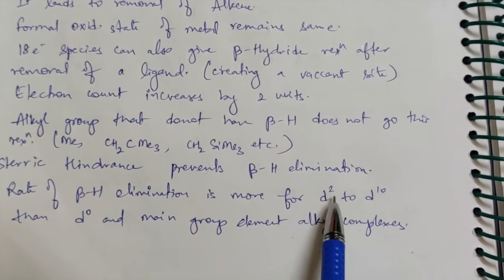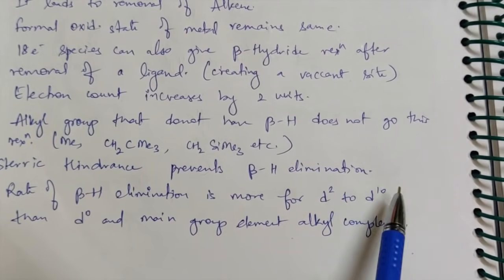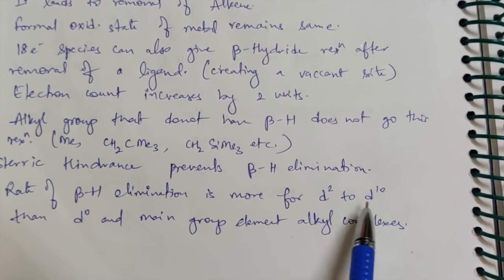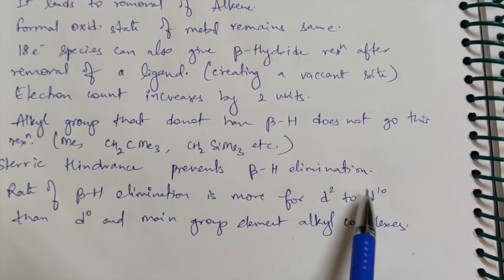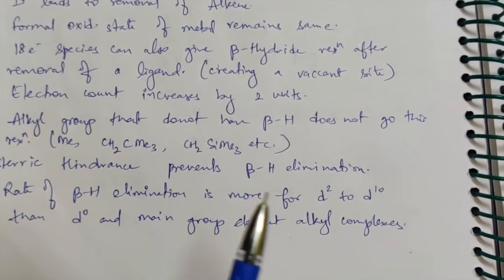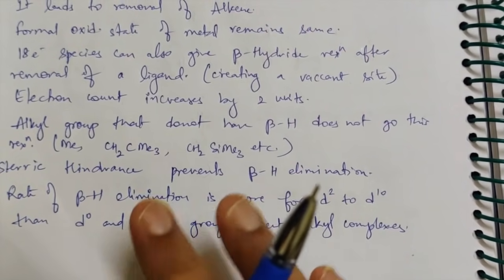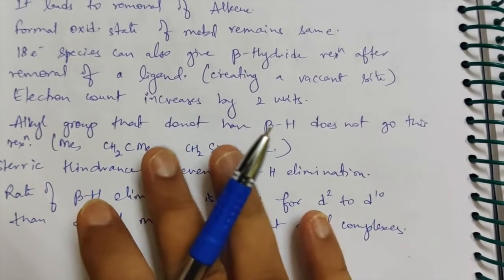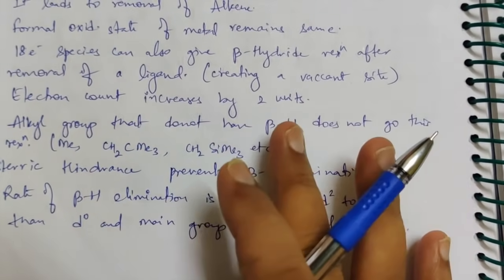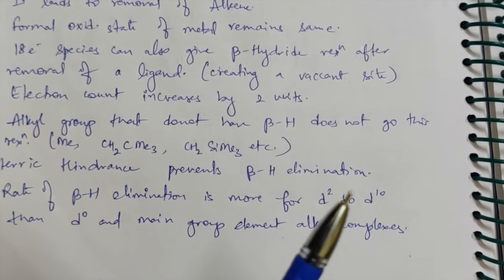The rate of beta-hydride elimination is greater for D2 to D10 metal complexes than for D0 complexes and main group elements. D0 metal complexes and main group elements do not give beta-hydride elimination, but D2 through D10 complexes do give beta-hydride elimination.